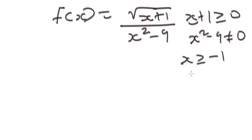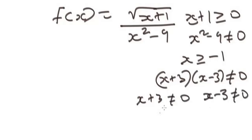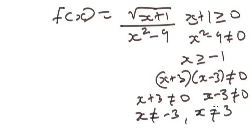From x plus 1 ≥ 0, we get x ≥ −1. For x squared minus 9 ≠ 0, we factor to get (x plus 3)(x minus 3) ≠ 0, so x plus 3 ≠ 0 and x minus 3 ≠ 0, giving x ≠ −3 and x ≠ 3.